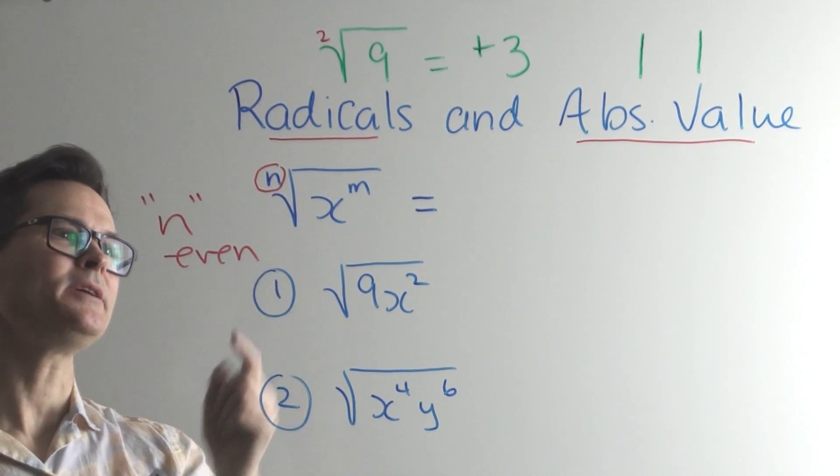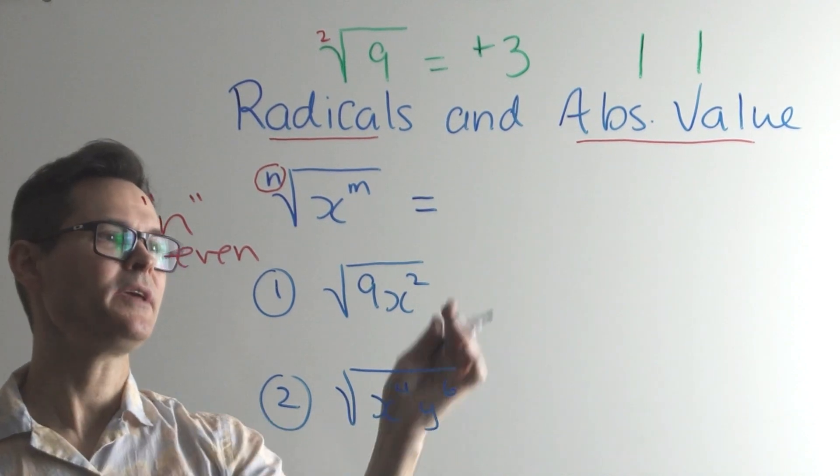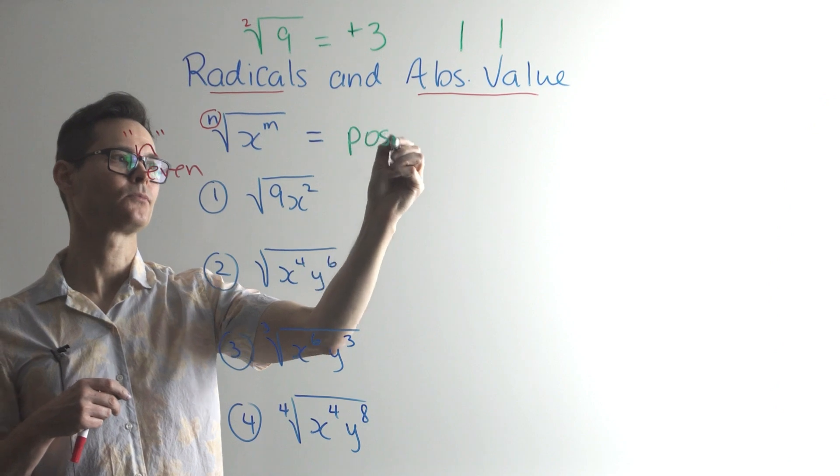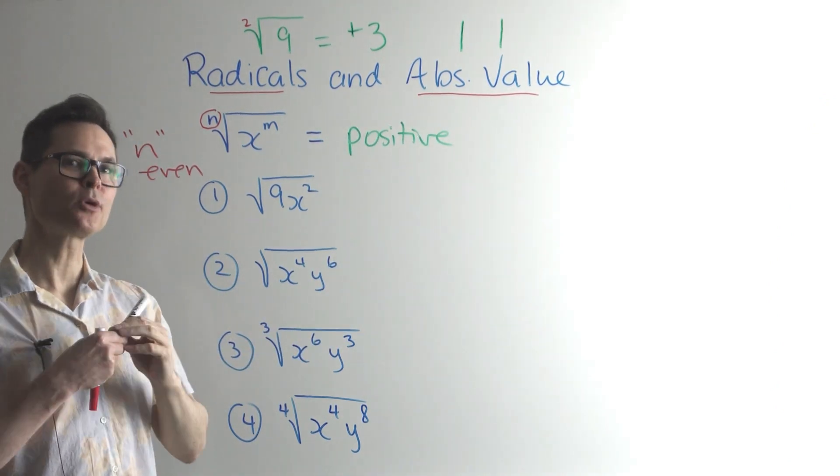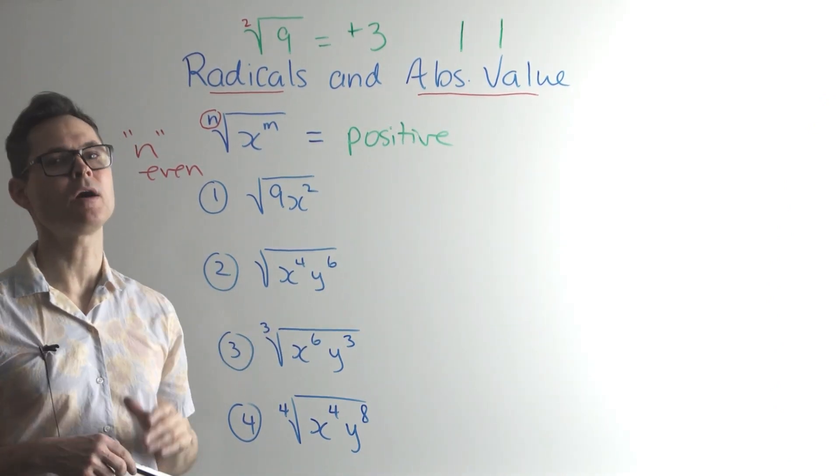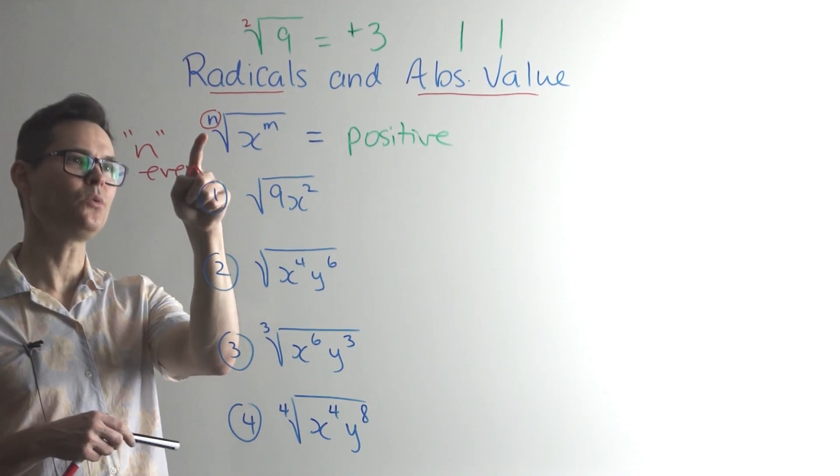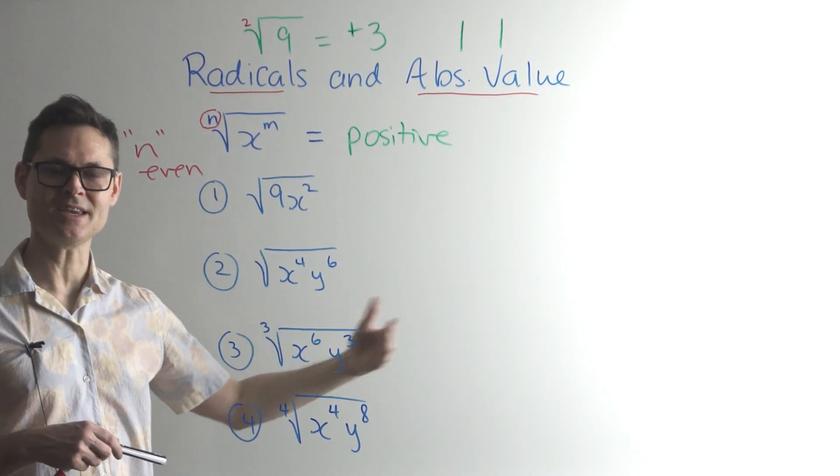And so the idea here is that when n is even, the answer that we place has to be positive. Because it wants the principal nth root, or the positive nth root. And again, this is only true when n is even: 2, 4, 6, 8, and so on. So let's take a look at some examples that make this point.